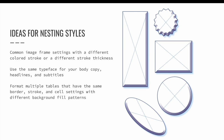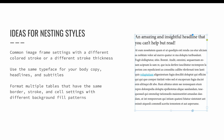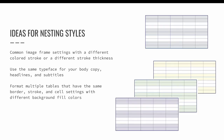Nesting styles can be a complicated process and it is easy to break your styles, so I recommend starting slow. Use regular non-nested styles until you feel comfortable with them, then start exploring nesting. Some basic ideas include having a common image frame with different color or stroke thickness, using the same typeface for body copy, headlines, and subtitles, and formatting tables with the same border and stroke but different fill color patterns.